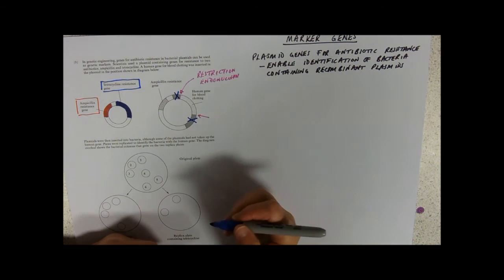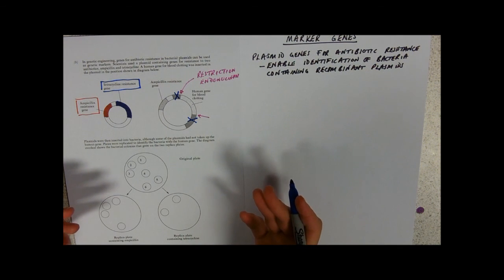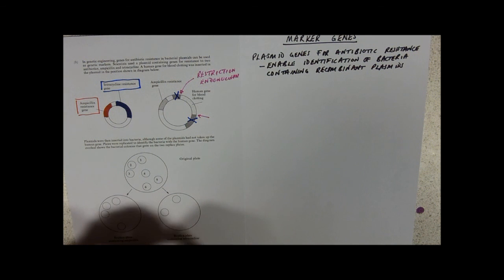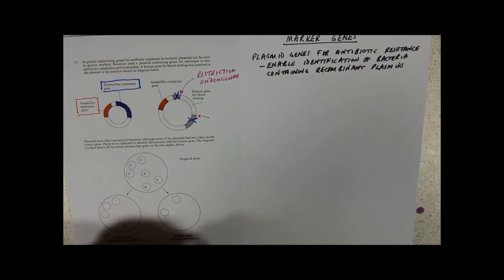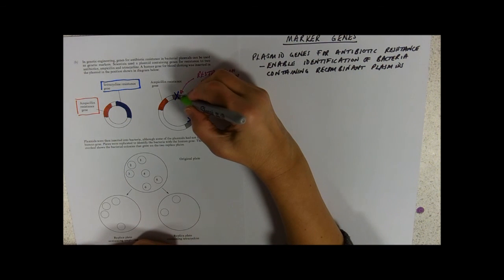It's made a cut there. Now that happens to be right in the middle of our tetracycline resistance gene, which now won't code because it can't be read from end to end for tetracycline resistance. Notice that we haven't cut into the ampicillin resistant gene. So that one is still intact. So that's lovely.